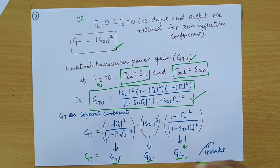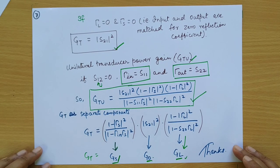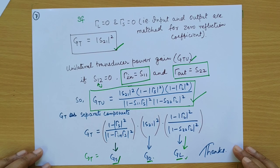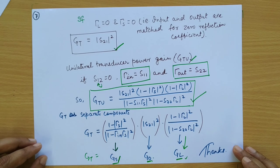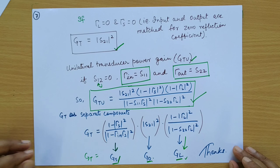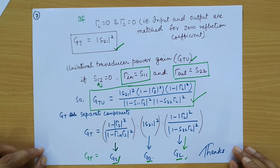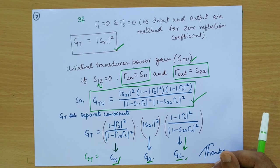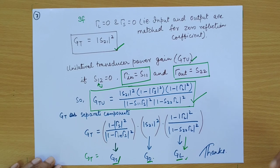These are the equations which can be used to calculate different types of power gain. In my next video, I will be drawing the stability circle using the Smith chart, and we will understand which types of loads are stable to design an amplifier. Thank you.